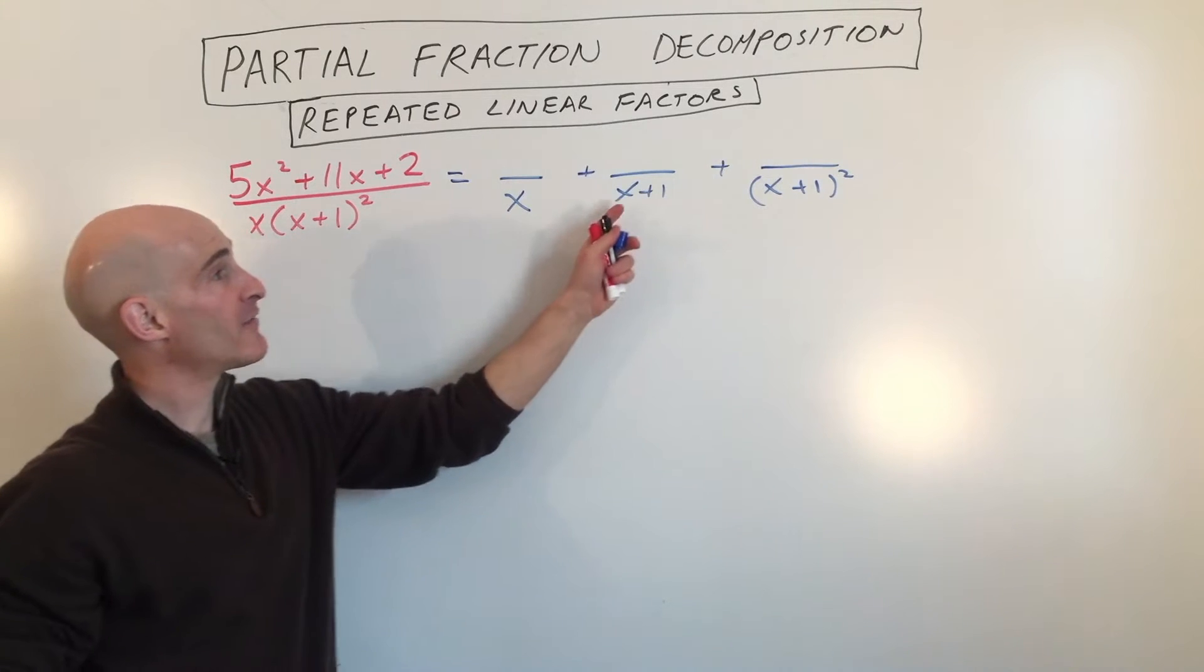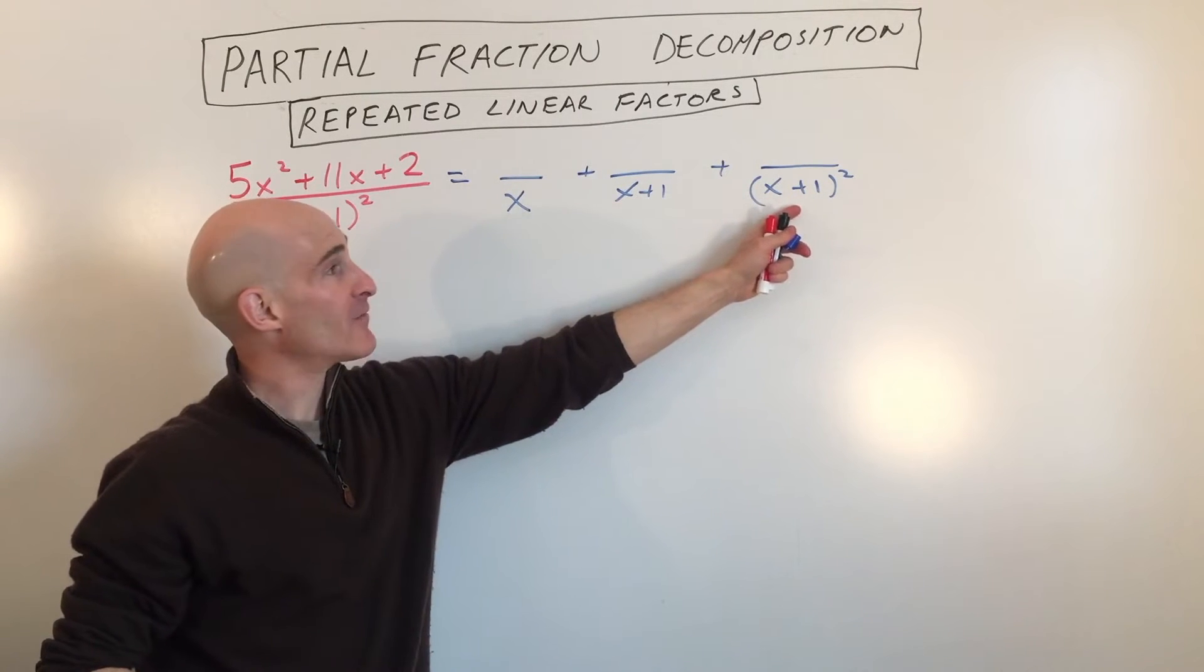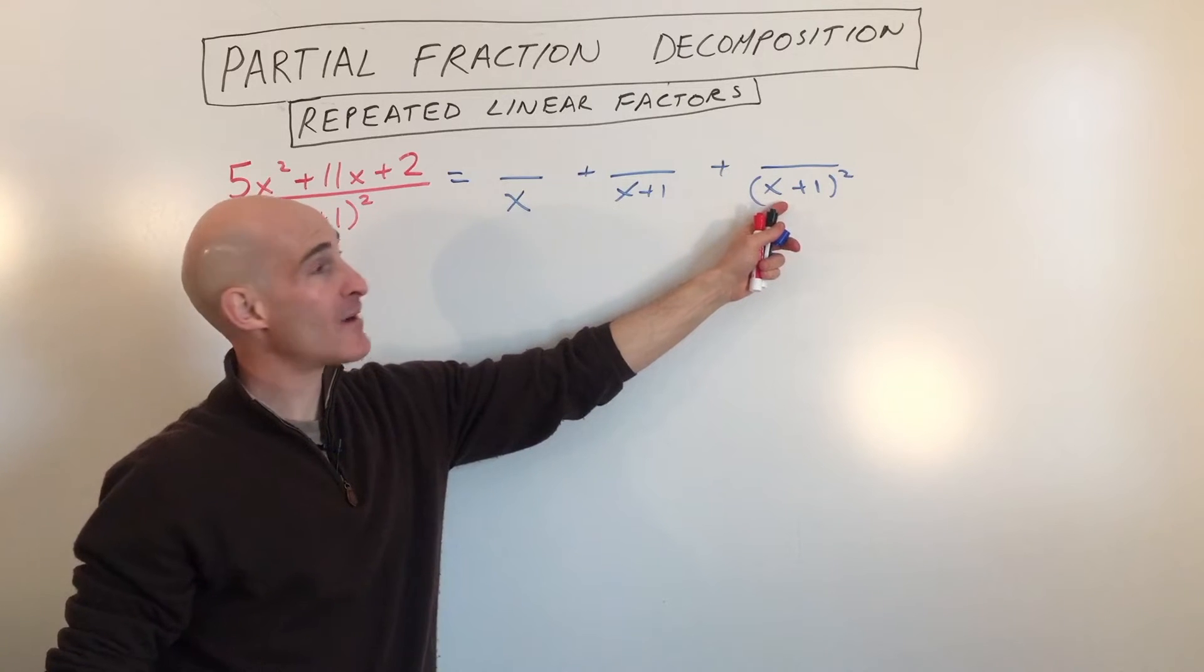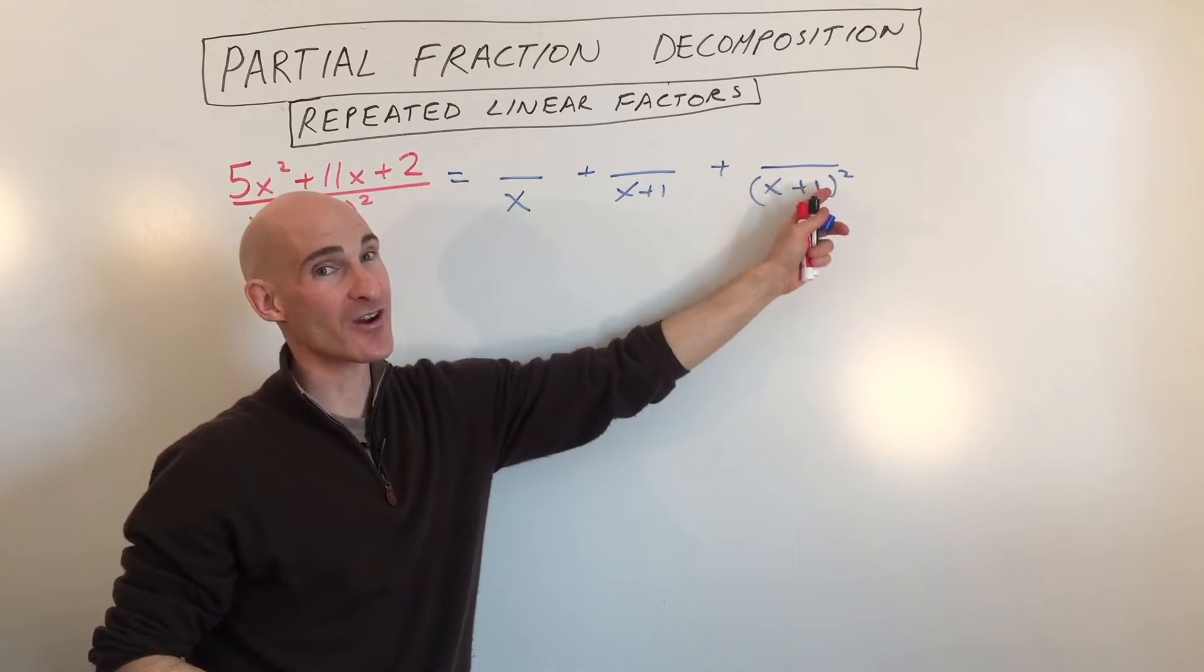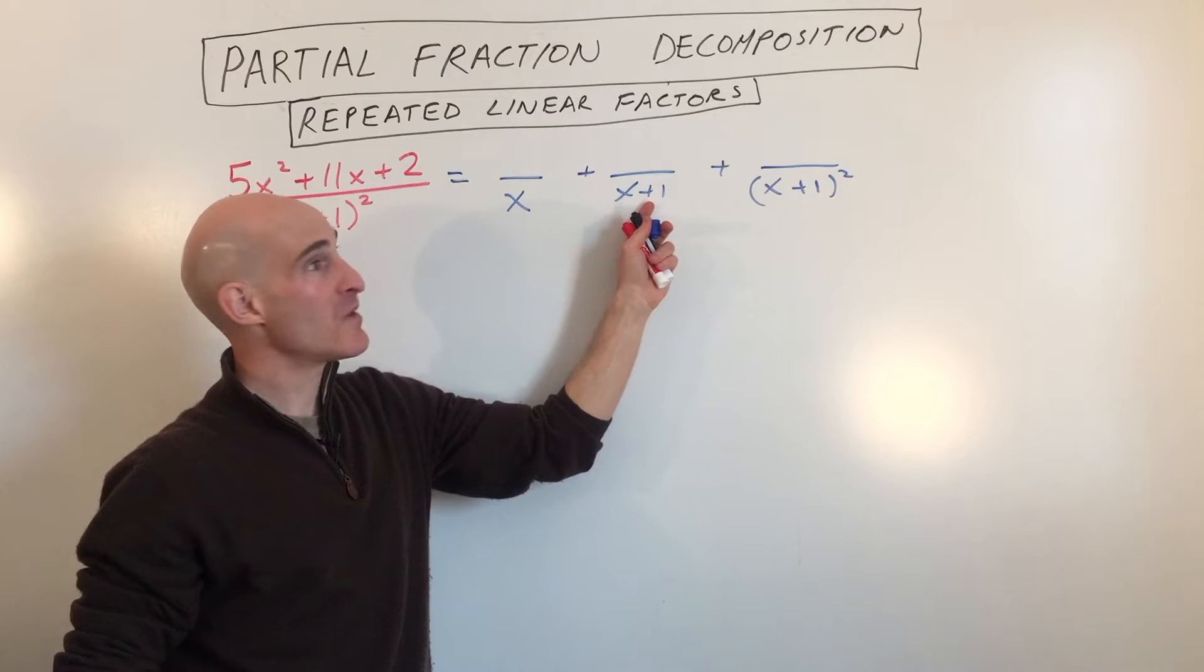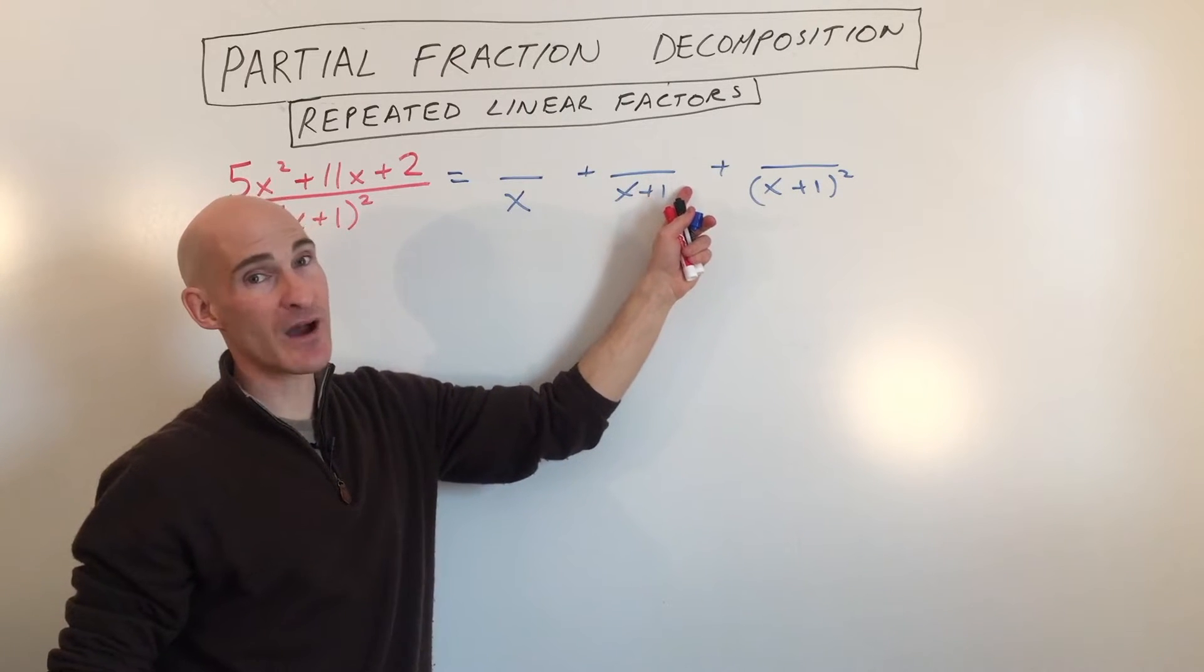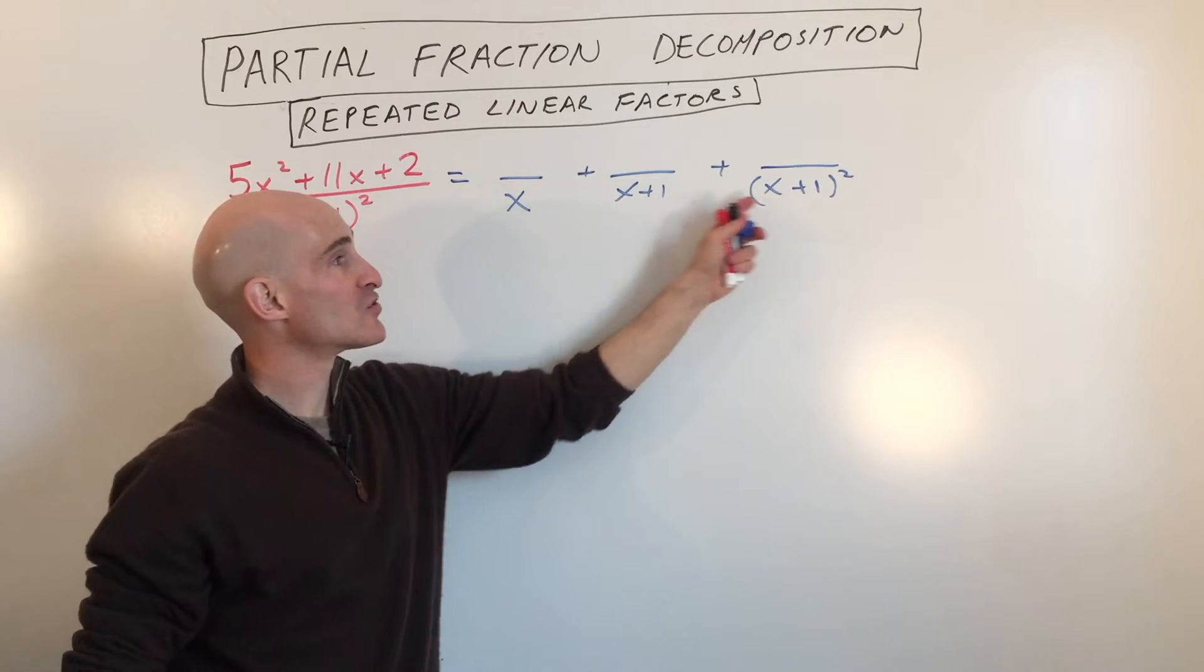So you could have this denominator and this denominator. When you combine them together, the common denominator is still going to be x plus 1 squared. So you have to consider the fact that there may be a fraction with just x plus 1 to the first power. Okay, so you want to take those into account.